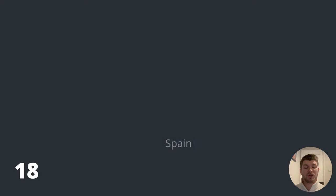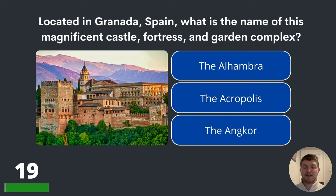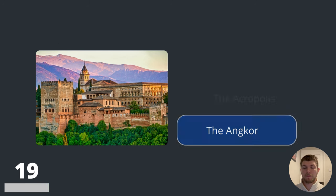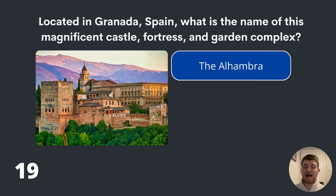Question nineteen. Located in Granada, Spain, what is the name of this magnificent castle, fortress and garden complex? The Alhambra, the Acropolis or the Angkor? The answer is the Alhambra.